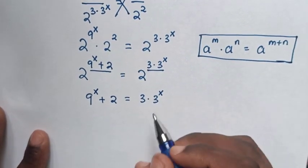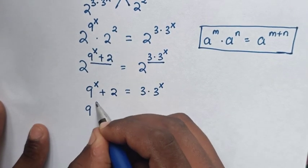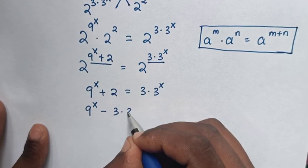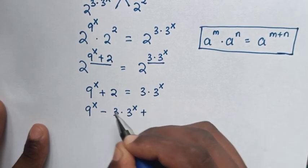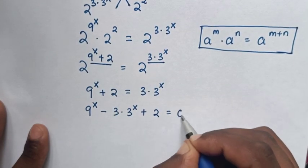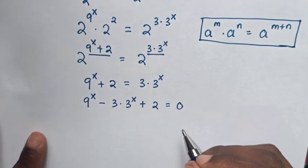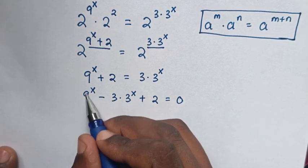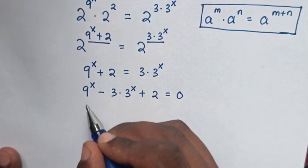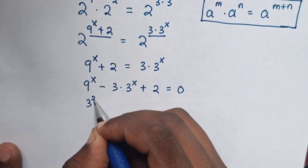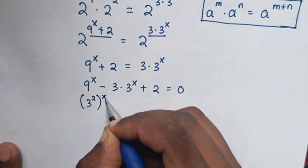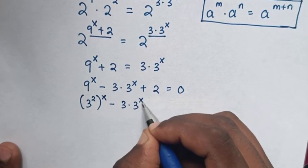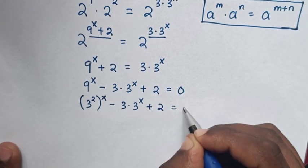Then we take terms to the left side, so it will be 9^x minus 3 times 3^x plus 2 is equal to 0.